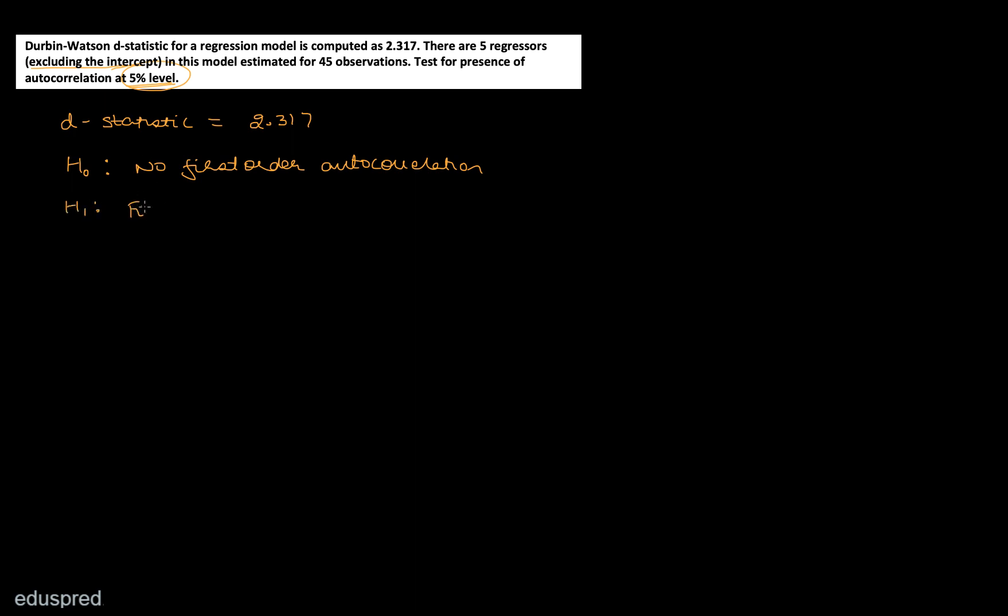And your alternate would be that first order autocorrelation exists. So this is your null hypothesis and this is your alternate hypothesis.